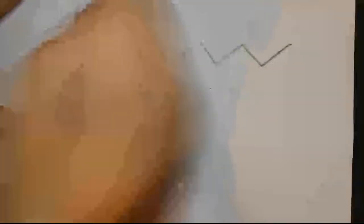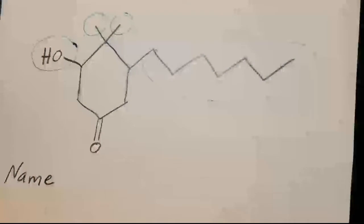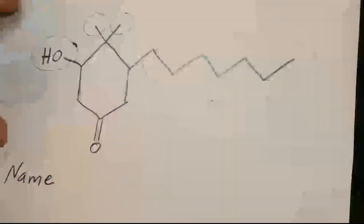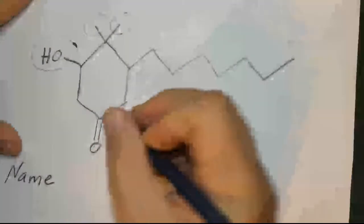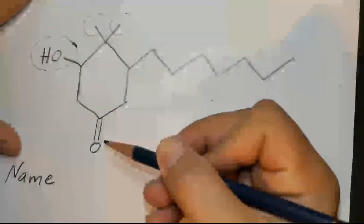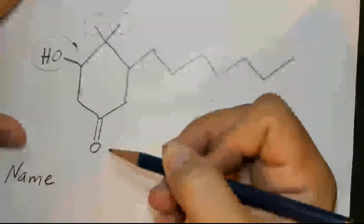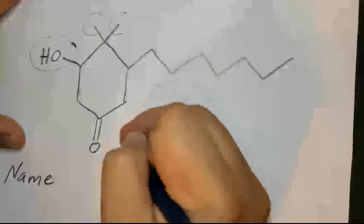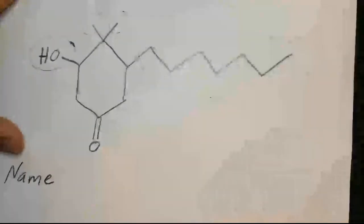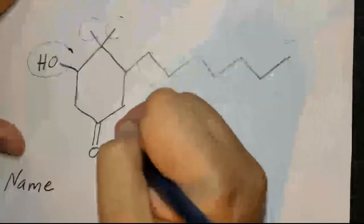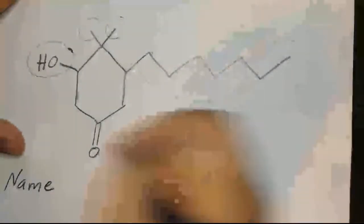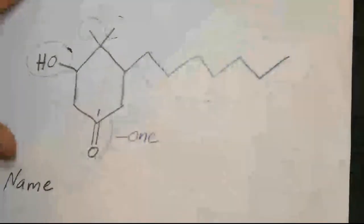The ketone is going to be treated as the primary functional group, which means it doesn't get named as a substituent — it gets named at the end of the parent name. Since it's a ketone, if you look up the chart, it's called '-one.' So we'll write '-one' for this structure. And since it is a cyclic structure, the numbering begins with one on the primary functional group.